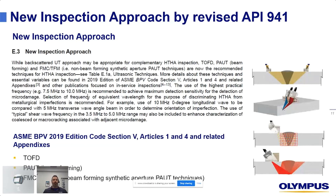The new inspection approach includes different methods added to Article 1 and Appendix 4: TOFD (time of flight diffraction), phased array — whether pitch-catch or pulse-echo — and FMC/TFM, a method more and more people are getting familiar with. What they all have in common is the use of higher practical frequencies — 7.5 to 10 MHz — to obtain maximum detection sensitivity and resolution for micro damage.